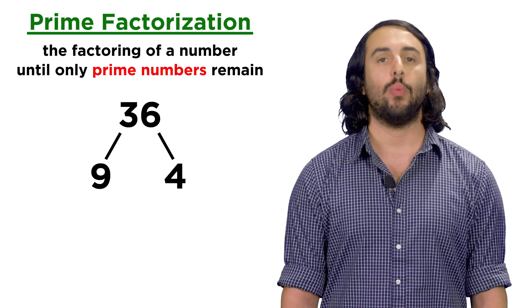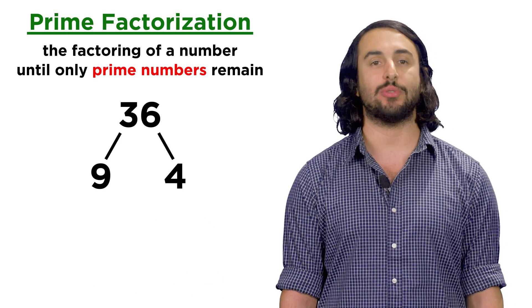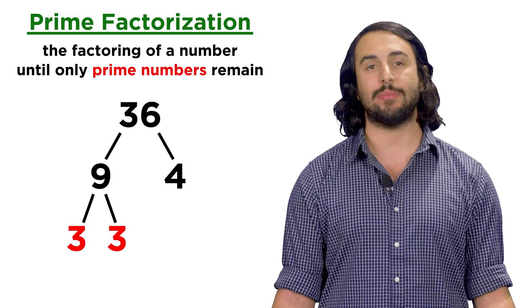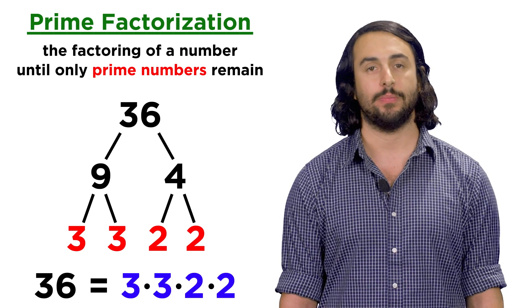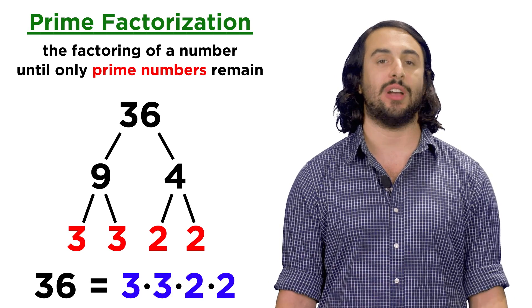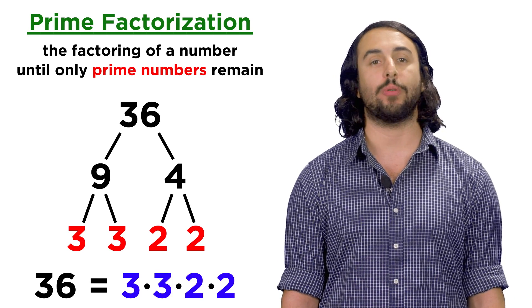How about thirty-six? We can split that into nine times four. Nine can be three times three, and four can be two times two, so three times three times two times two. Notice how we are never done until we are left with all prime numbers.